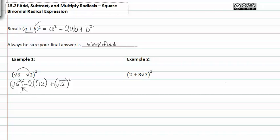And another way of thinking about this would be if you have a square root of six, and you're squaring it, you're kind of undoing that square root, so it's just six minus two root twelve plus two.